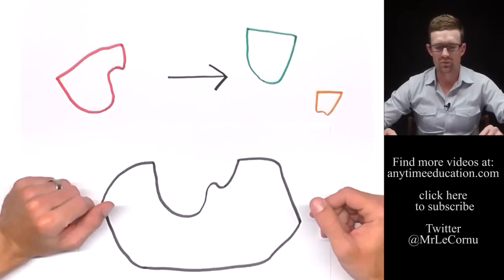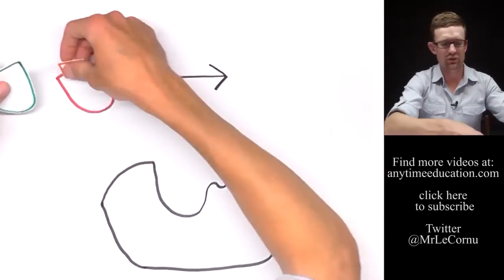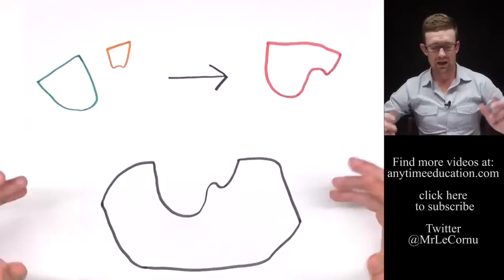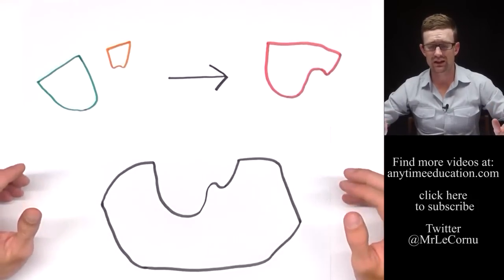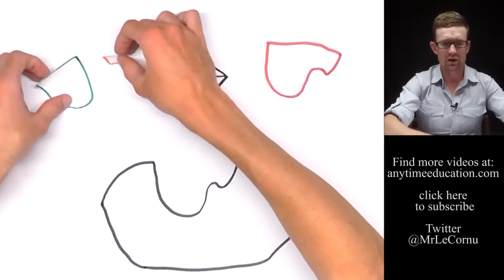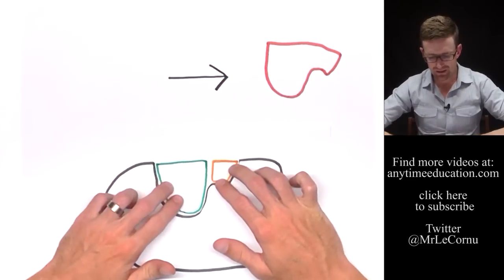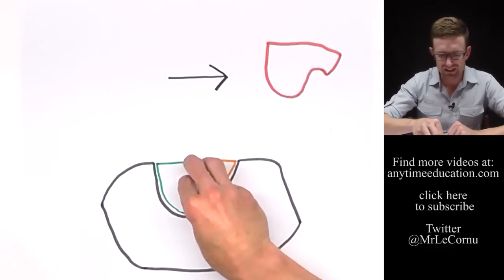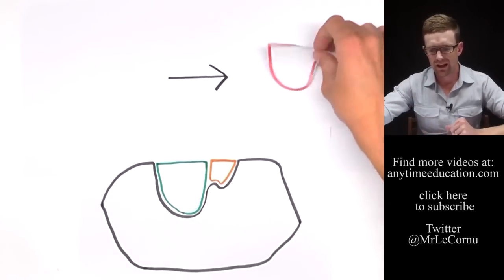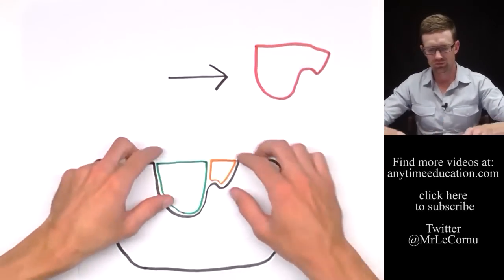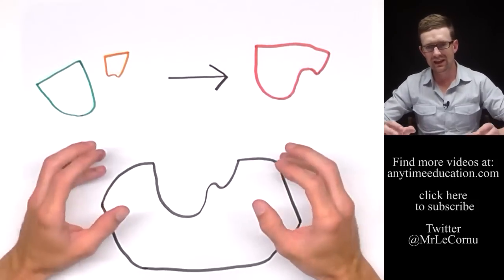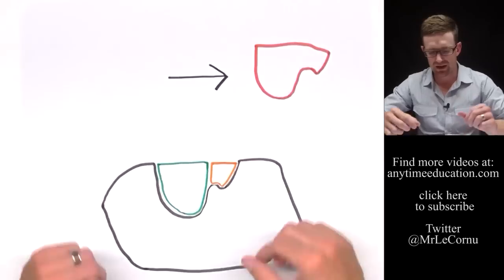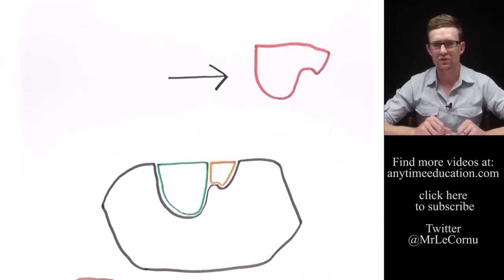The other example of how an enzyme can lower activation energy is if we've got a reaction where we have these two substrates that are forming this product. How an enzyme would lower the activation energy required in this example is by bringing the two substrates together in the correct orientation so that the bonds can form or the reaction can take place between those two substrate molecules and then we can produce our product molecule. So in that example the enzyme is lowering activation energy by bringing the two substrate molecules together in the correct orientation so that they're able to undergo the reaction.